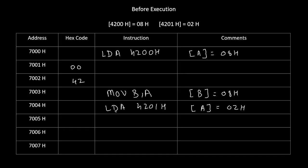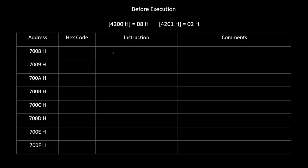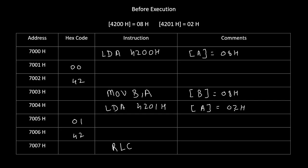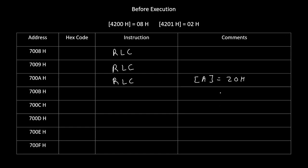This LDA instruction is a 3-byte instruction, so the opcode of LDA comes here and 4201 is written in the appropriate bytes. Now we need to rotate the content of the accumulator towards the left, so we write instruction RLC, which stands for rotate left without carry. We do this process 4 times: RLC rotation 1, RLC rotation 2, RLC rotation 3, RLC rotation 4. After the 4th rotation our accumulator becomes 20H. Before rotating, the accumulator was 02H; after rotating we got new value 20H.